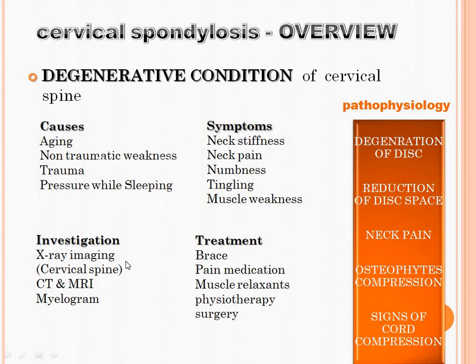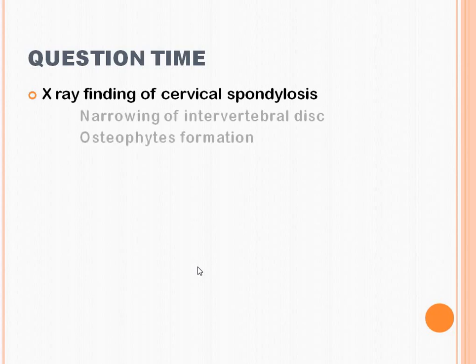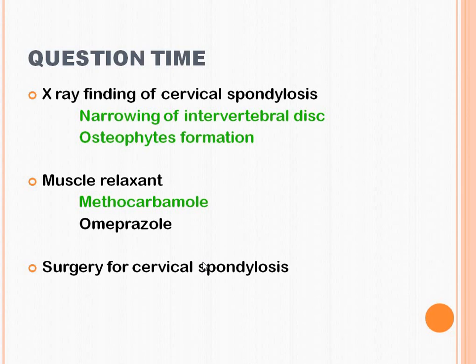Investigations include X-ray of the cervical spine in anteroposterior and lateral views, CT, MRI, and myelogram. Treatment includes pain medication, physiotherapy, muscle relaxants, brace, and surgery. Quiz: X-ray findings of cervical spondylosis are narrowing of intervertebral disc and osteophyte formation. Methocarbamol is a muscle relaxant. Surgery for cervical spondylosis — laminectomy — not tracheostomy.